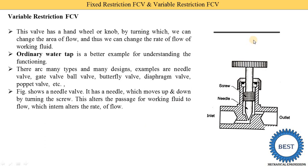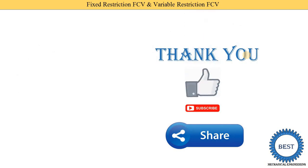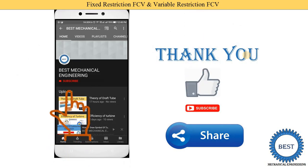Here you see this is the symbol of variable restriction FCV. First we draw the symbol of fixed restriction FCV and then draw one arrow line — then it is converted into the variable restriction FCV. Thank you for watching this video. If you learned something, please like the video and subscribe to my channel for more videos related to hydraulics and pneumatics and other subjects of mechanical engineering. Various links are provided in the description as well as in the card on the top right of your screen.